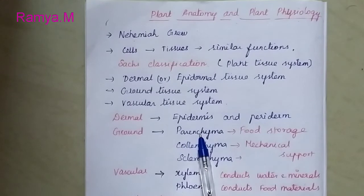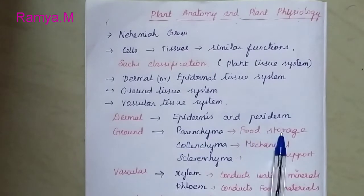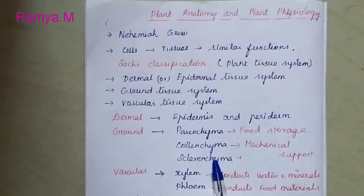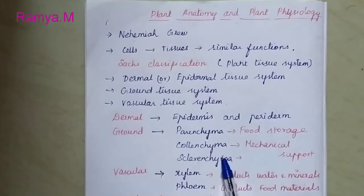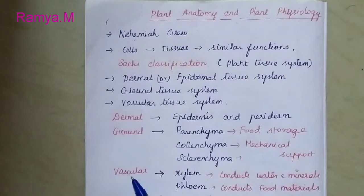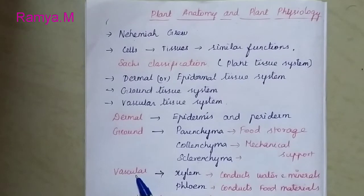The function of the parenchyma is food storage — these cells are used to store food. The vascular tissue system is present in the inner portion of the plant.